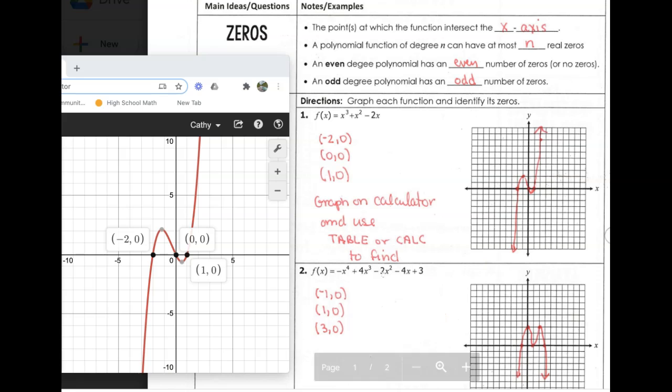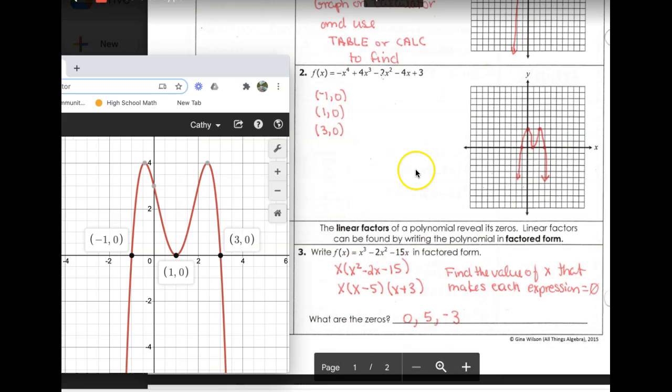Let's do another one. In this next polynomial, minus x to the fourth plus 4x cubed minus 2x squared minus 4x plus 3, if I input this to Desmos, it looks like this. So this is degree 4, and we expect four zeros. And look, when I plot this, I can see I have a zero at -1, a zero at 1, and a zero at 3.